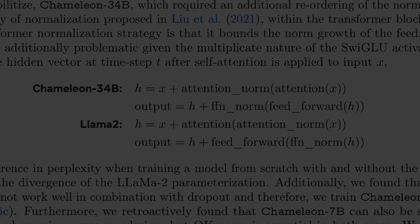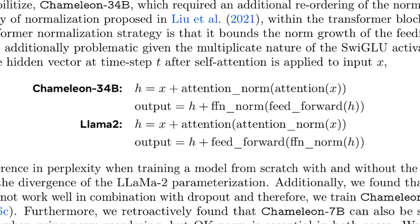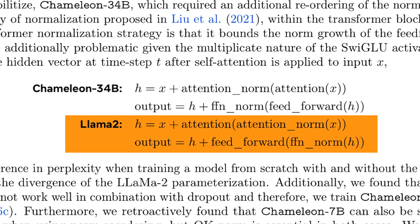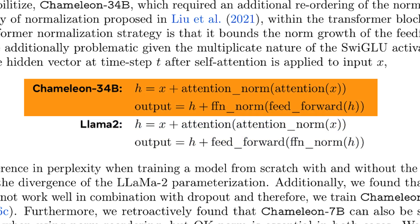We already saw that normalization helps control the growth of input values. But in usual transformers such as LLaMA, normalization — making values fall within a certain range — happens after computing the attention. They increased the stability of the model by reordering the norms so that normalization occurs before these processes.